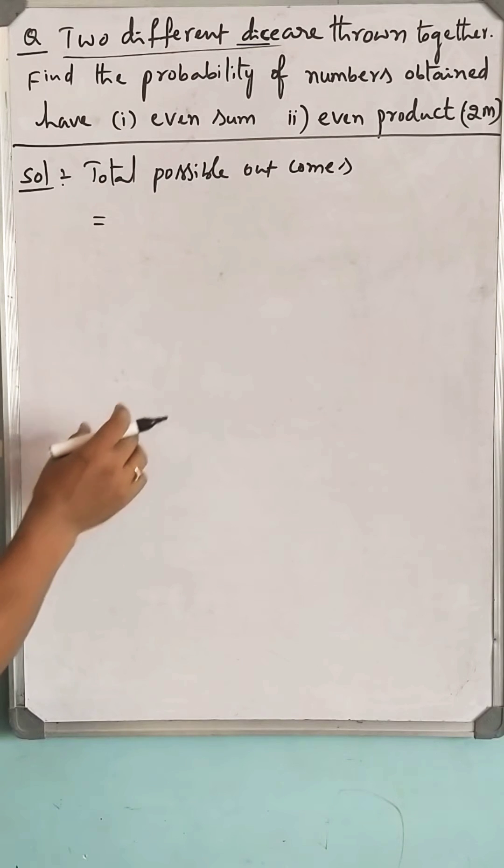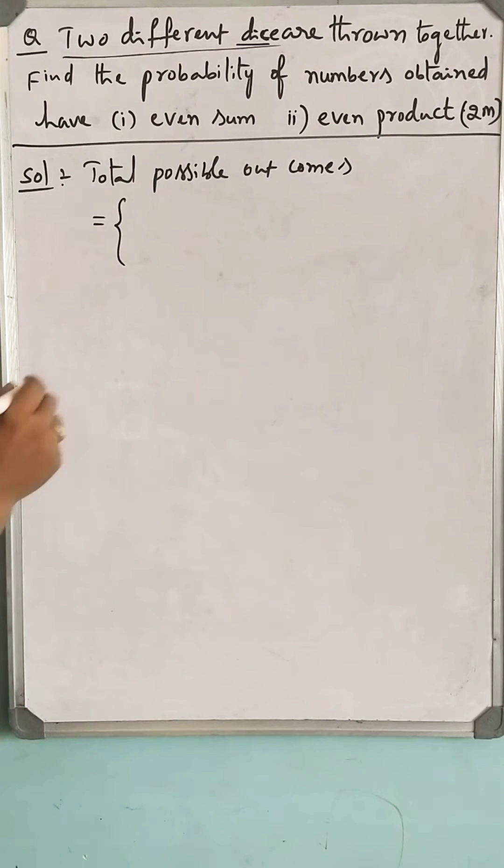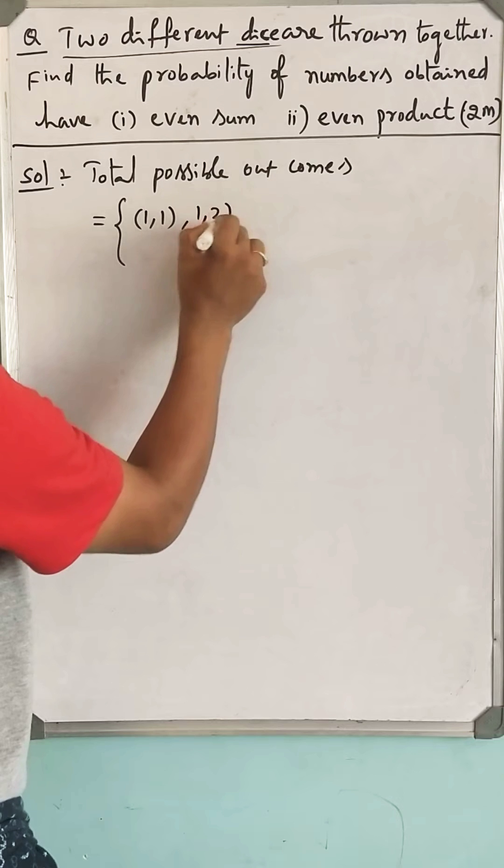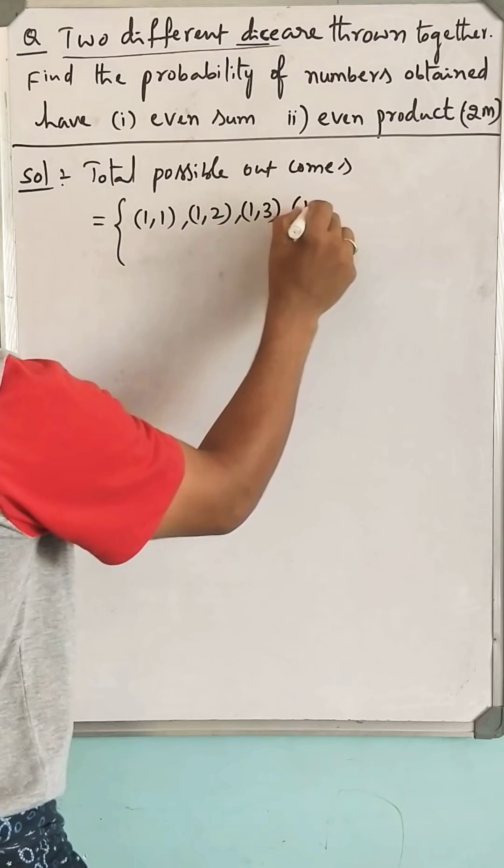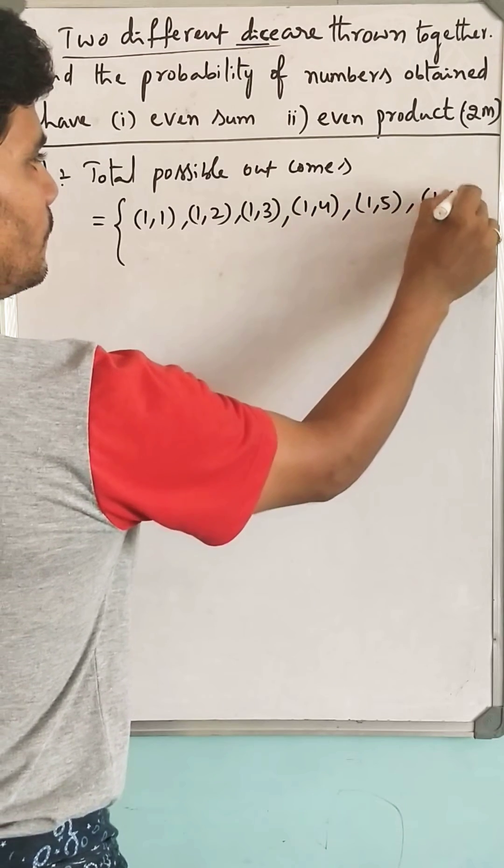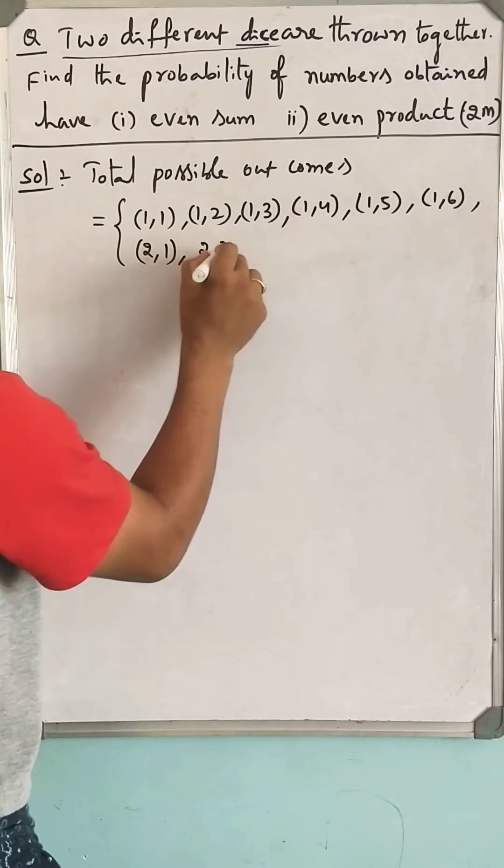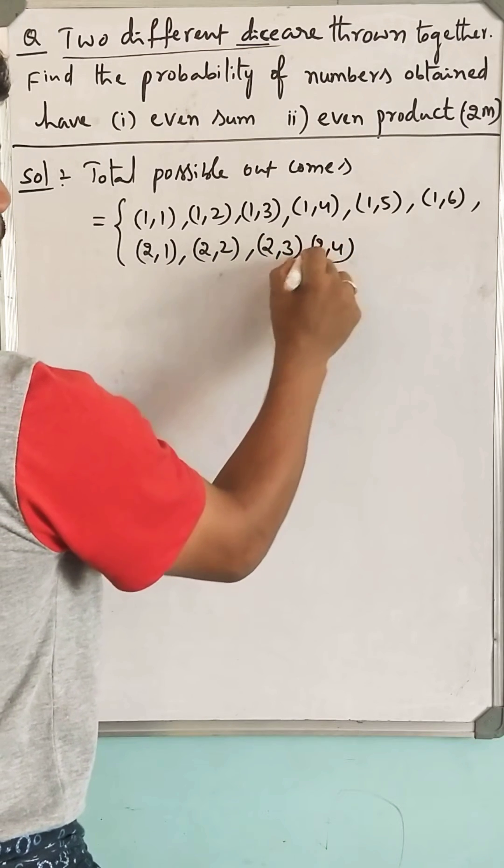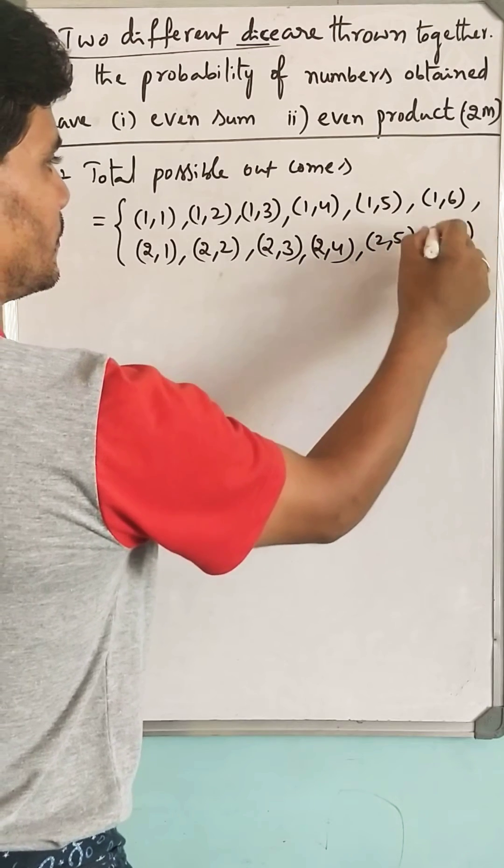You will get two results at a time. Let me write as ordered pair: (1,1), (1,2), (1,3), (1,4), (1,5), (1,6), (2,1), (2,2), (2,3), (2,4), (2,5), (2,6).